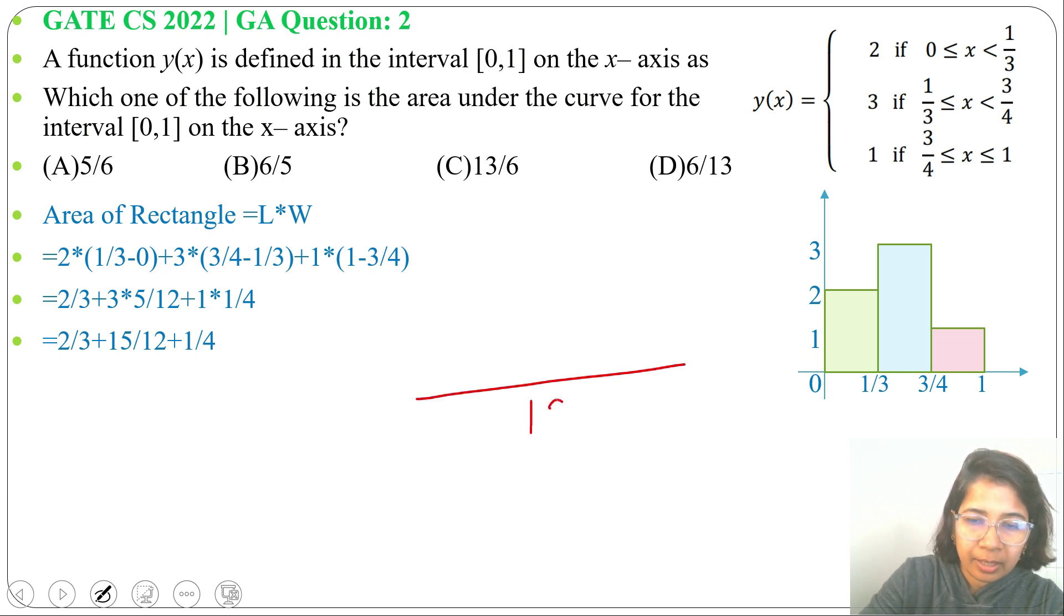Now solve it. 12. 3 times 4 is 12. So 2 times 4 is 8 plus 15. 12 by 4 is 3. 3 times 1 is 3. 15 + 3 is 18. 18 + 8 is 26 divided by 12. Now divide by 2 it will be 13/6.